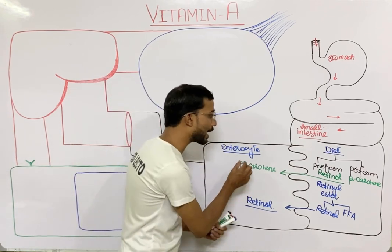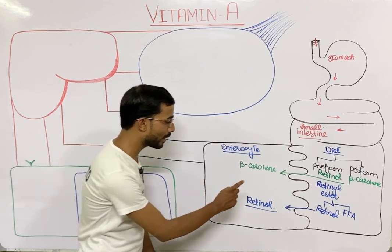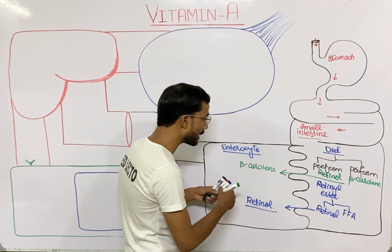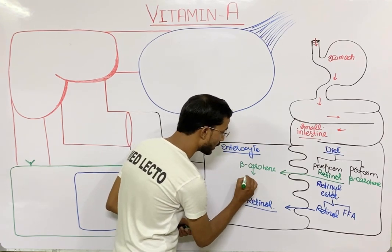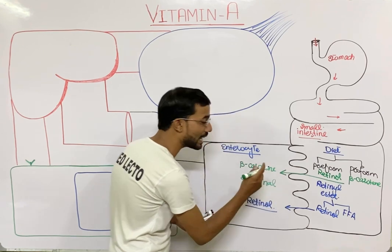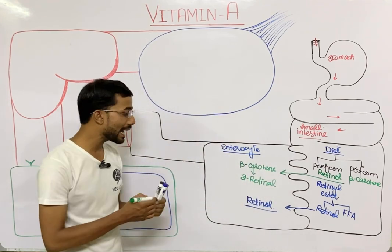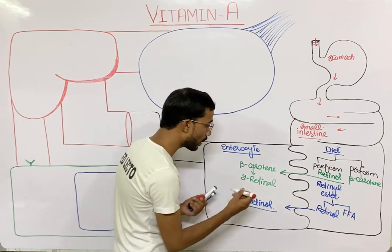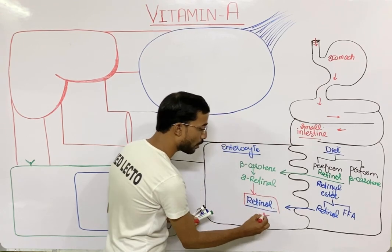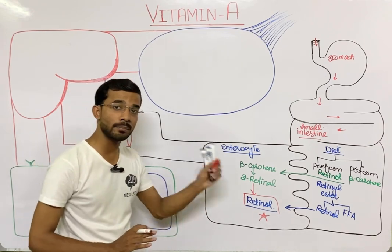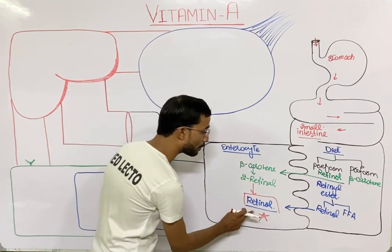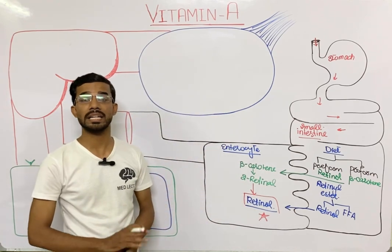Beta carotene has the ability to convert into retinol. Beta carotene first converts into two retinaldehyde molecules (the aldehyde form), and after that it converts into retinol. So ultimately, from both animal and plant sources, the final product is retinol — the pre-form.